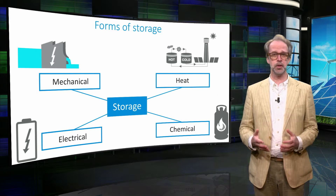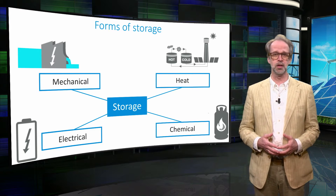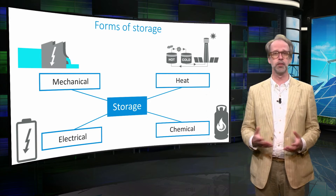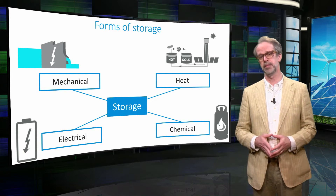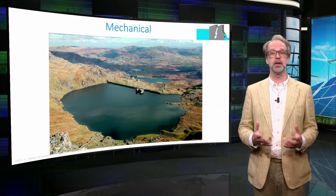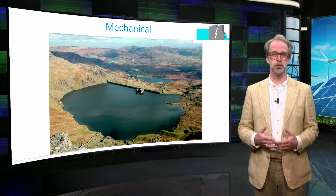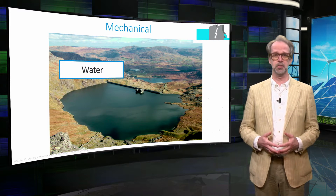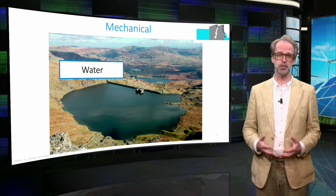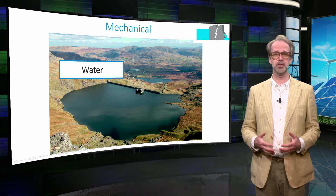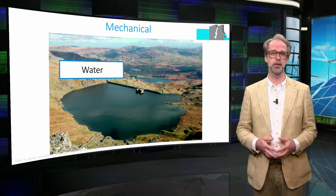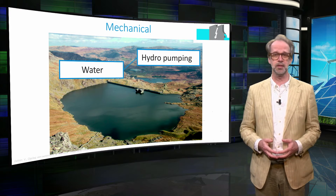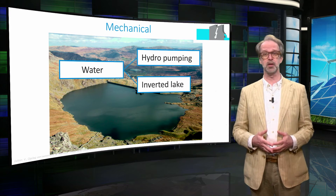We will now shortly discuss mechanical and heat storage, while we will explore battery storage and chemical storage further in the upcoming videos. Mechanical storage works by using potential energy. An example is the potential energy stored in water that is pumped to a height level that is not in equilibrium with its surroundings. This is used in hydropower stations and in the so-called inverted lake.